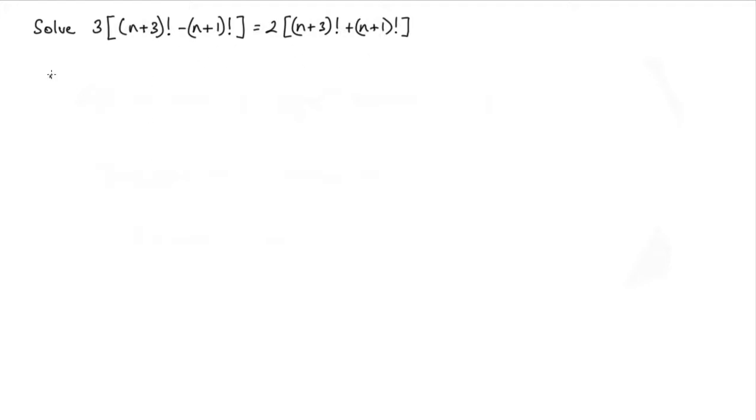On the left hand side, I would have 3 times n+1 factorial, and in the brackets we'll have n+3 times n+2. That would give me the n+3 factorial here, and then we're subtracting just a 1.